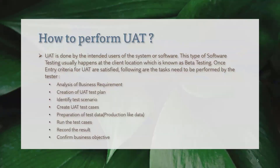How to perform UAT? UAT is done by the intended user of the software or system. This type of testing usually happens at the client location, but that is not mandatory because some client locations don't have a UAT testing team. So it may be performed by either a third party or the in-house team on the developer side. Generally, this is also called beta testing once the entry criteria of UAT are satisfied.